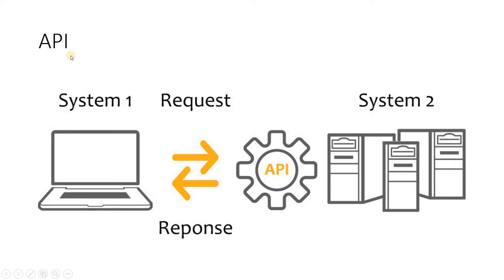First, let's recall what is API - that is nothing but Application Programming Interface. Suppose you went to a hotel and food is being prepared in the kitchen. You will not directly go to the kitchen. You call a waiter, the waiter takes your order, goes to the kitchen, and asks the chef to make the food. When the chef is done, the waiter brings the food to you. The waiter acts like an intermediator between you and the kitchen.